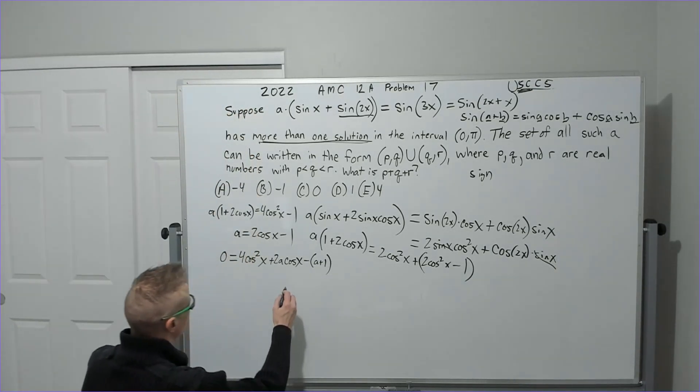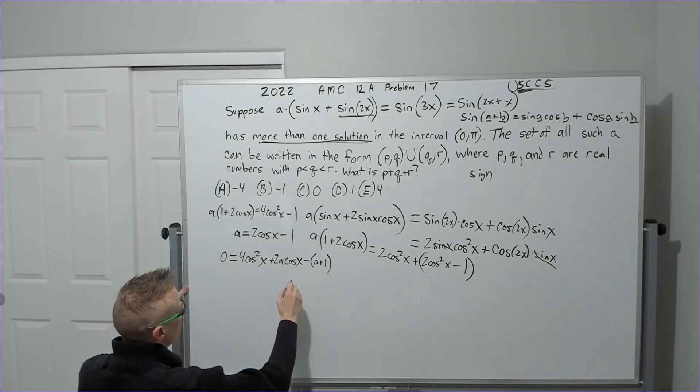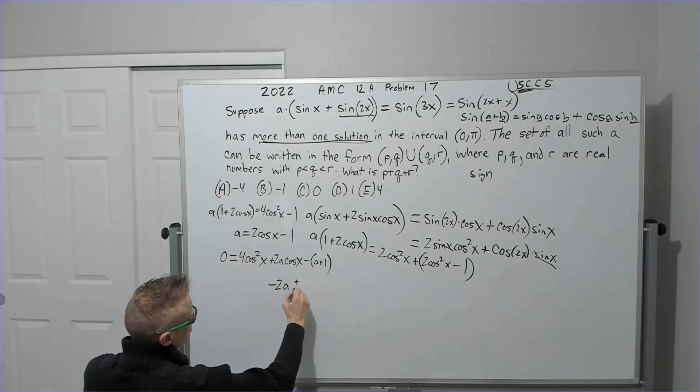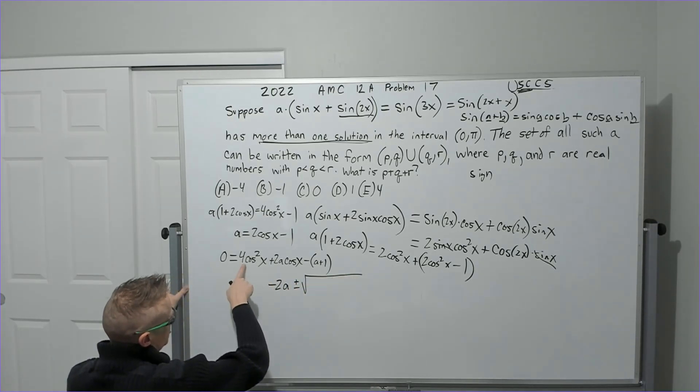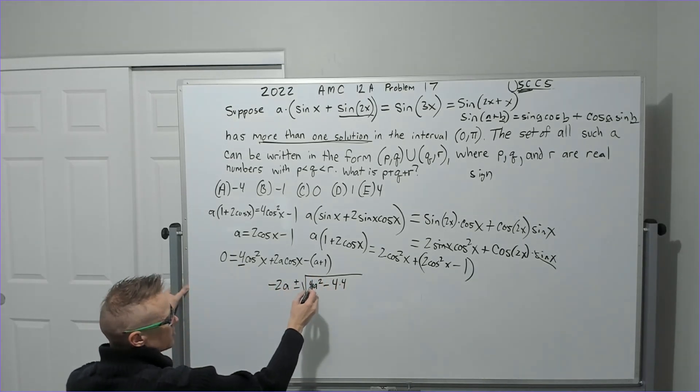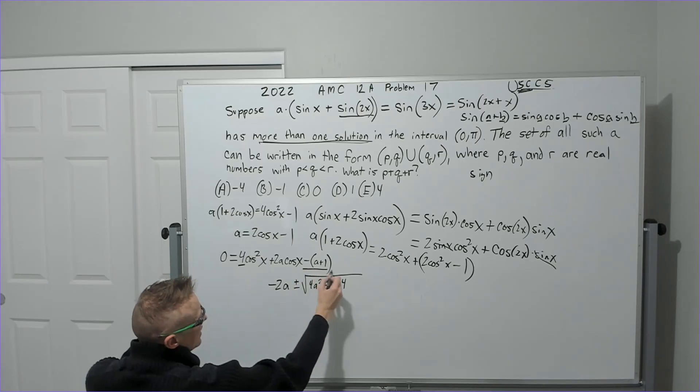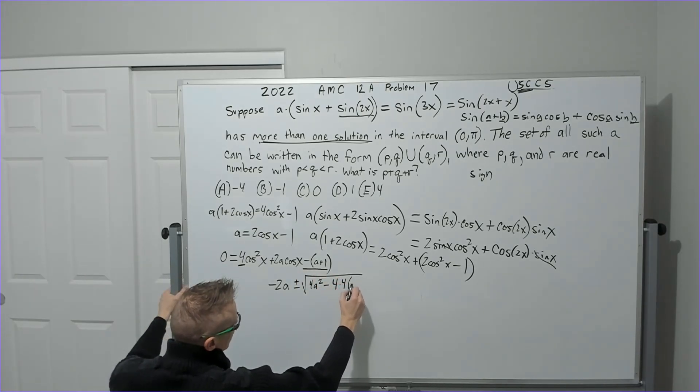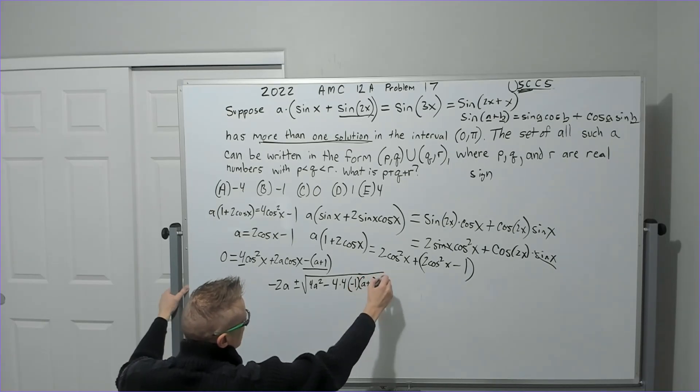So let's go over here. Negative b or b squared. I'll just write the negative b. We don't actually need it. Negative 2a plus or minus the square root. B squared is going to be 2a squared, which is 4a squared minus 4a, which is 4, being the coefficient of cosine squared. C is negative a plus 1. I'm just going to write it as negative 1 times a plus 1.